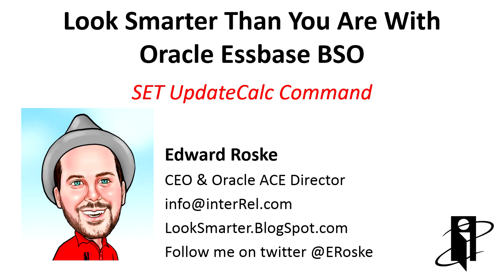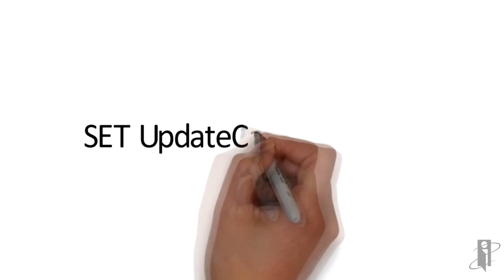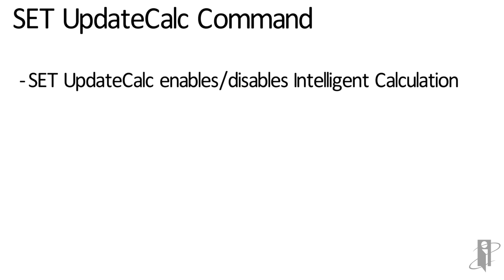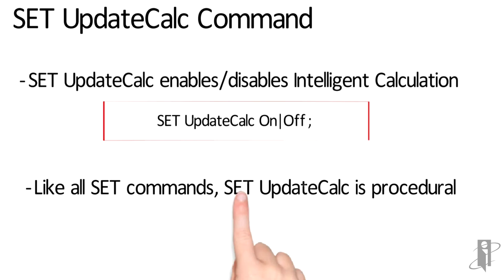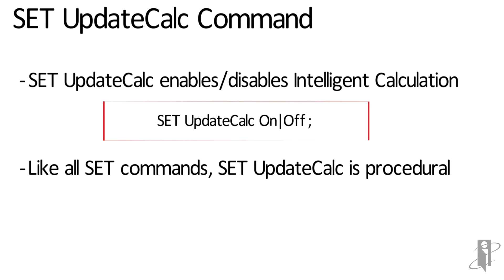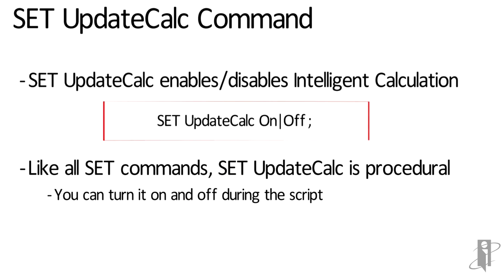It's easy to confuse the SET UPDATE CALC command with the Update Calc setting in the sbase config file, but we'll be covering the one you can use inside of an sbase calc script. SET UPDATE CALC turns on or off intelligent calculation. Like most SET commands, it is procedural, meaning you can turn it on or off within the calc script. At the end of the script, it'll revert to whatever the database-wide setting is. The syntax is just SET UPDATE CALC and then either ON or OFF.